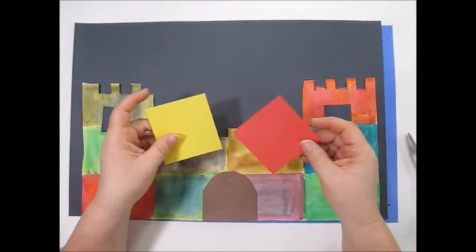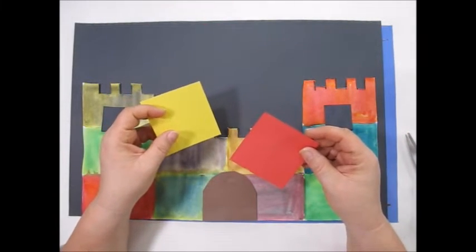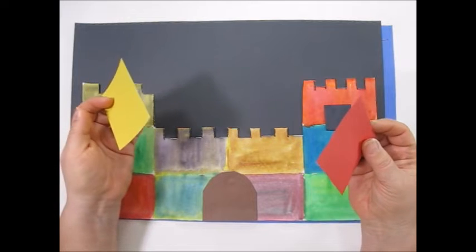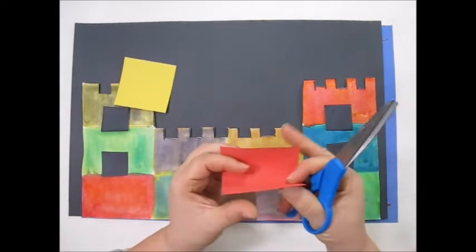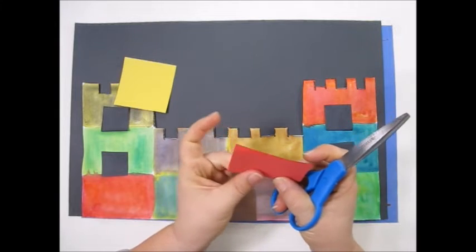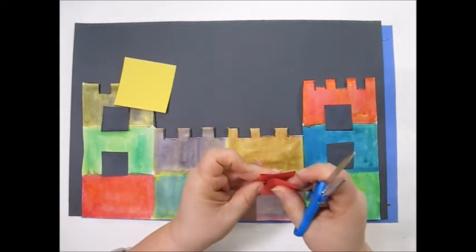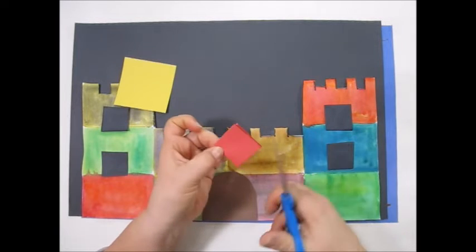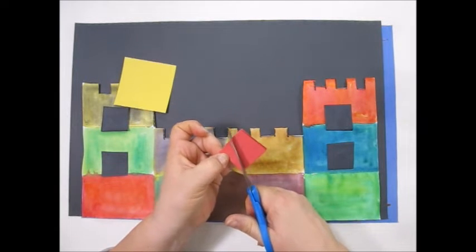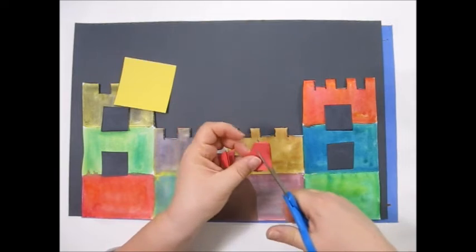The next two colors are going to be flags. If the king and queen are in the castle, the flags are flying on top of the castle. Flags can be rectangles. They can also be triangles. I'm going to fold my paper in half and in half again to make four triangles.